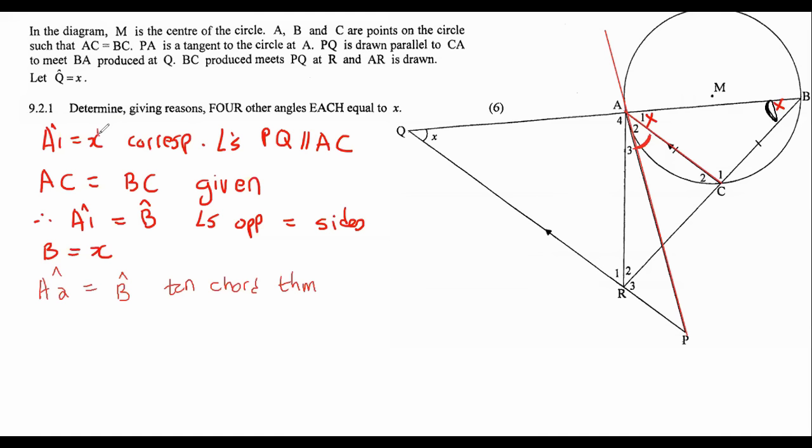So we now have one, two, sorry, two and three. We need one more. Can you see that if we look at this line over here and this line over here, there's an alternating angle. Can you see that? There is an alternating angle with P. So we can say that angle P is also equal to x, and that is because of alternating angles, because the line AC is parallel to the line PQ. And so there we have it, guys. We have found four other angles equal to x.